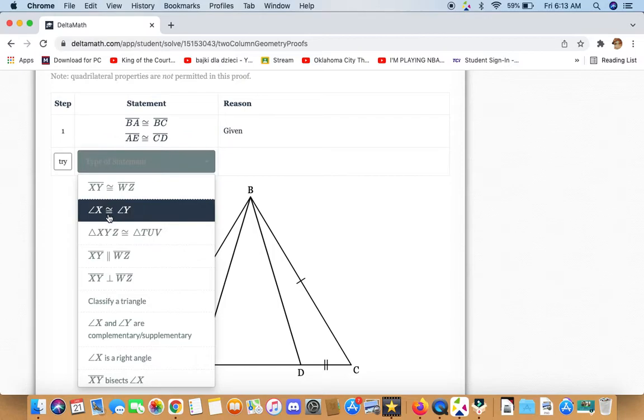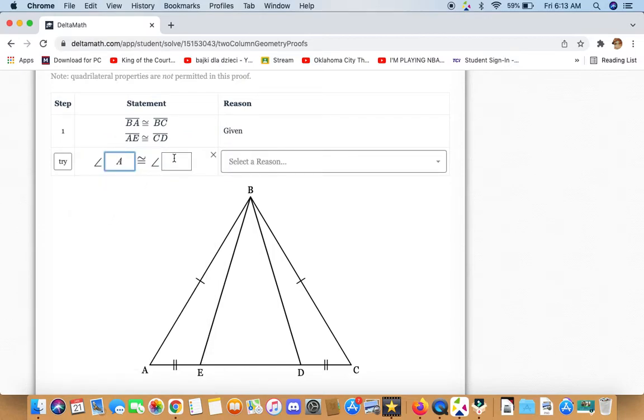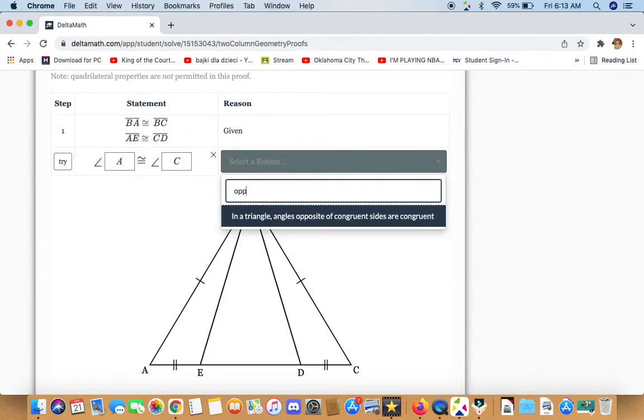So, the first thing we can say is angle A and angle C are congruent to each other because in a triangle, angles opposite of congruent sides are congruent. These are the congruent sides.